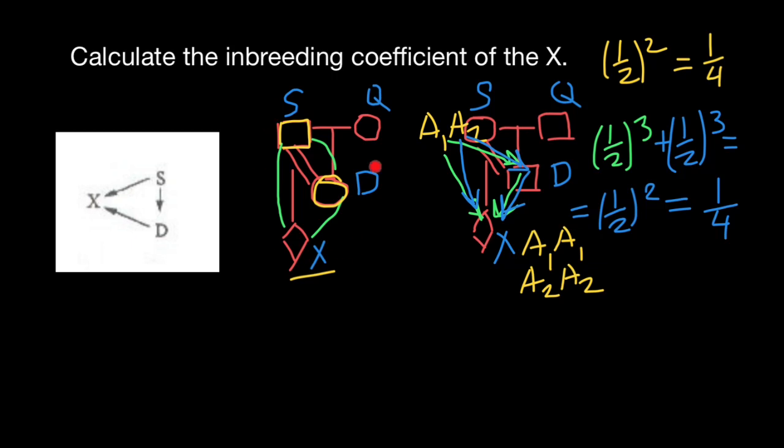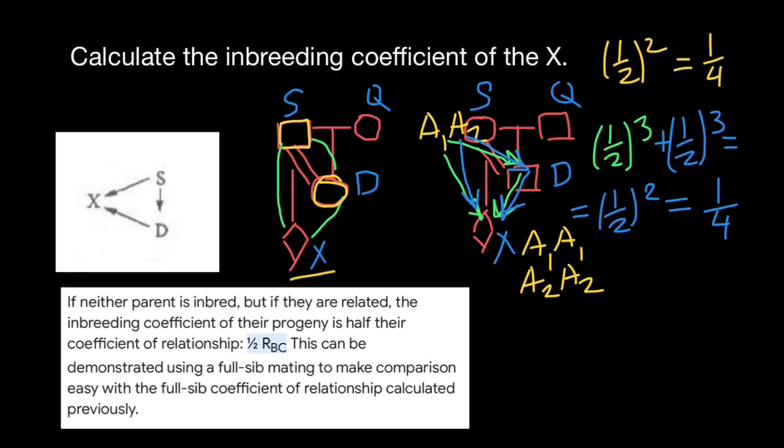Maybe this explanation would give you more clear understanding how inbreeding works. The first method we call node method, it's a little bit faster. The second method we say pathway method where we count passes. The answer is the same, 25%. Now the third method.